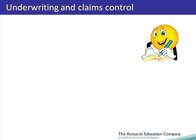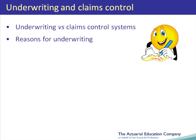In this unit we will look at two risk management tools: underwriting and claims control systems. We will start by looking at the difference between underwriting and claims control and look briefly at what each is trying to achieve. We will then look at underwriting in more detail, in particular the different reasons for underwriting and the different types of underwriting.